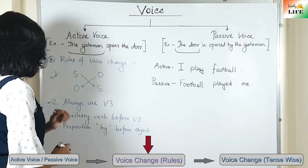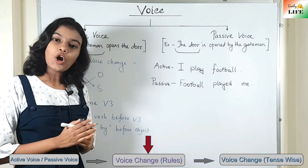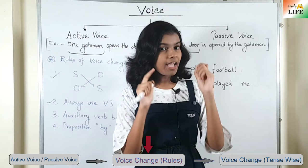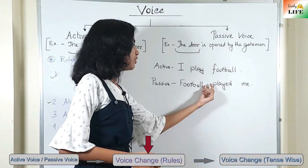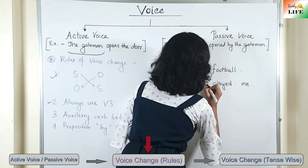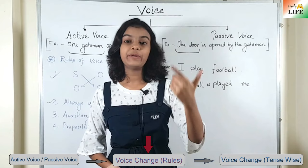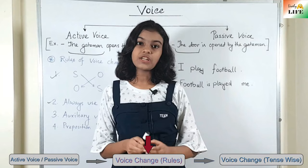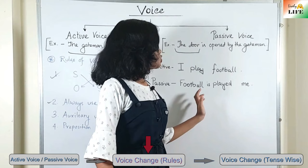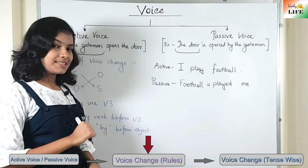The third rule: use an auxiliary verb before V3. Auxiliary verbs are helping verbs — for example, am, is, are. We have to use an auxiliary verb before the V3 form. Before 'played,' we use the appropriate auxiliary verb. 'Football' is third person singular, so after that we write 'is.' Why 'is'? Because the sentence 'I play football' is in present tense. If the sentence were in past tense, the auxiliary verbs used would be 'was' and 'were.' We will discuss this further when we go through all the tenses.